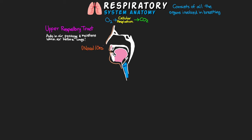Within the upper tract there are three main parts. The first is our nasal and oral cavity — the first entry point of air into our body, either through the mouth or the nose. The second part is an area called the pharynx, which is a common pathway for both the respiratory and digestive systems and also plays an important role in our ability to vocalize.